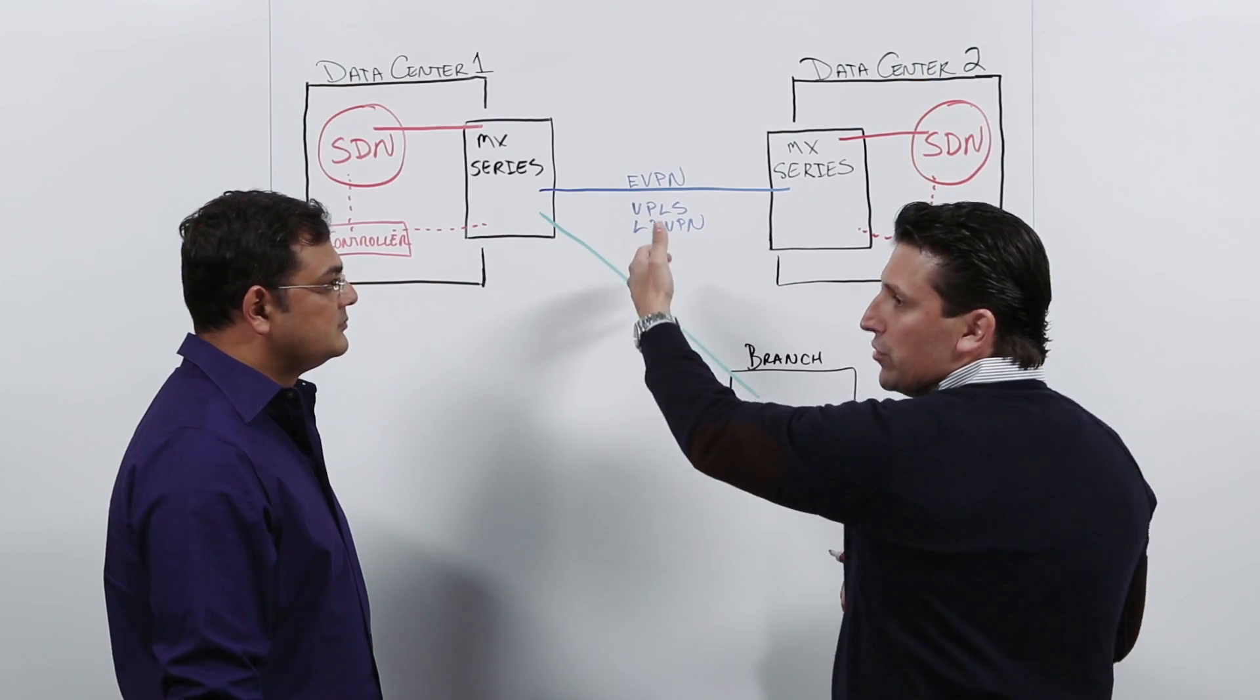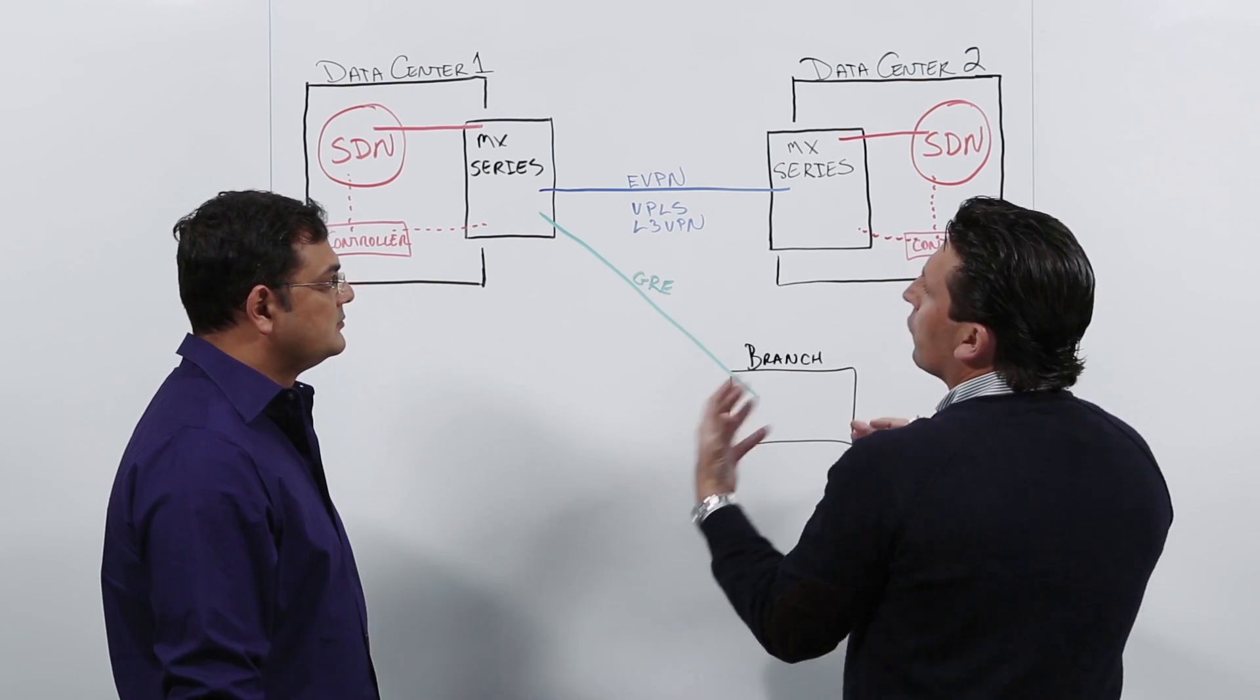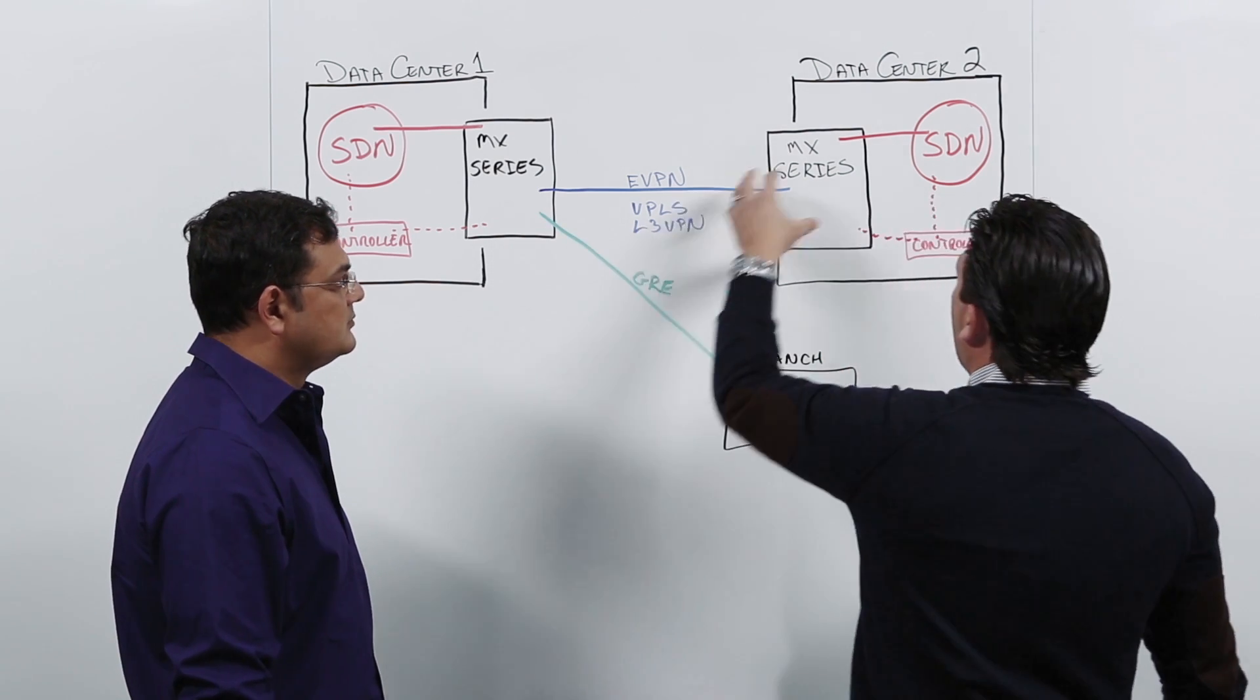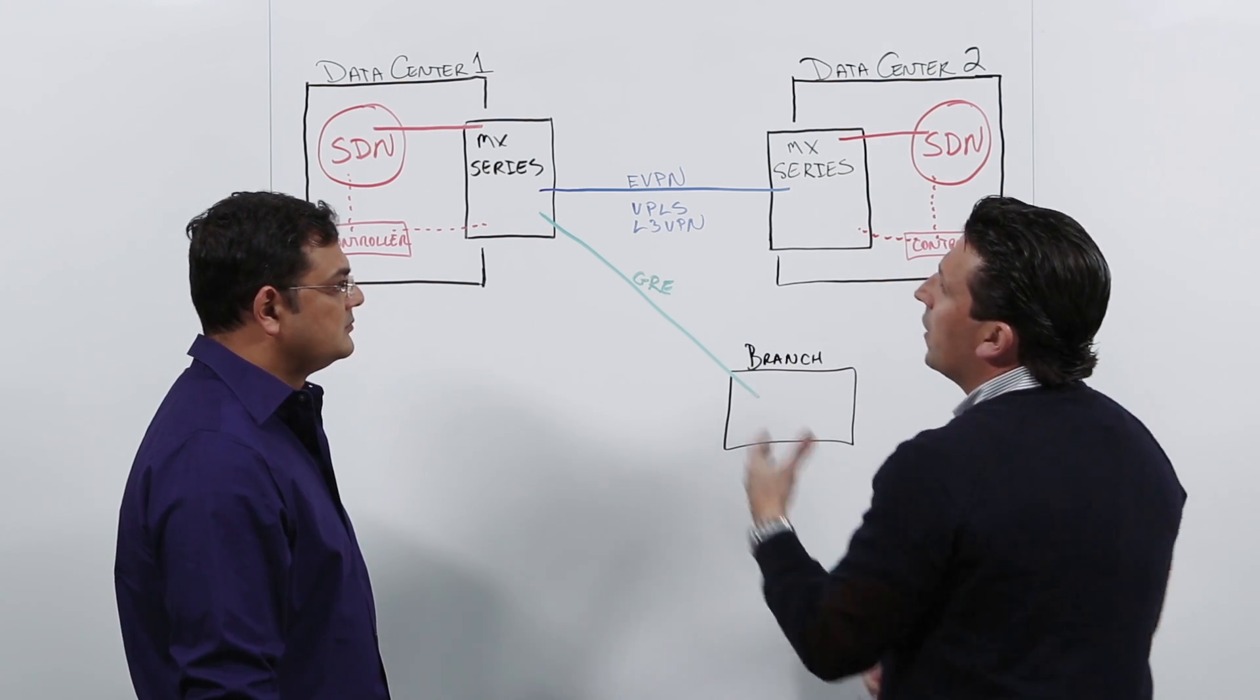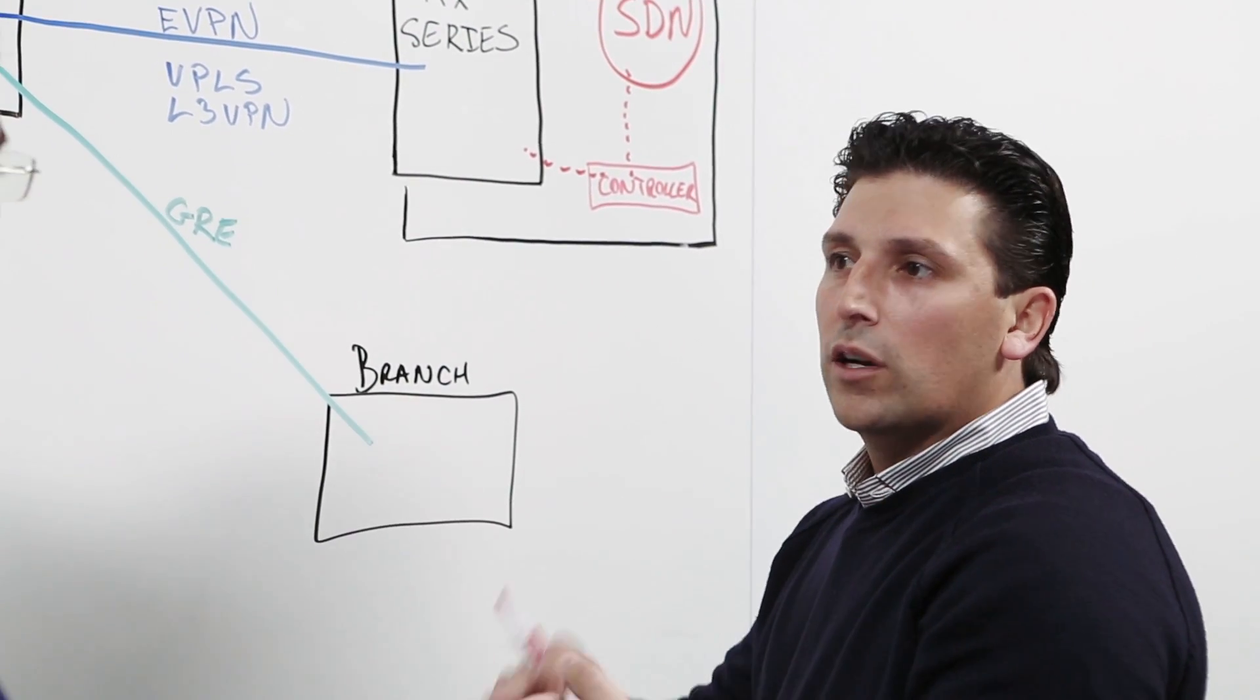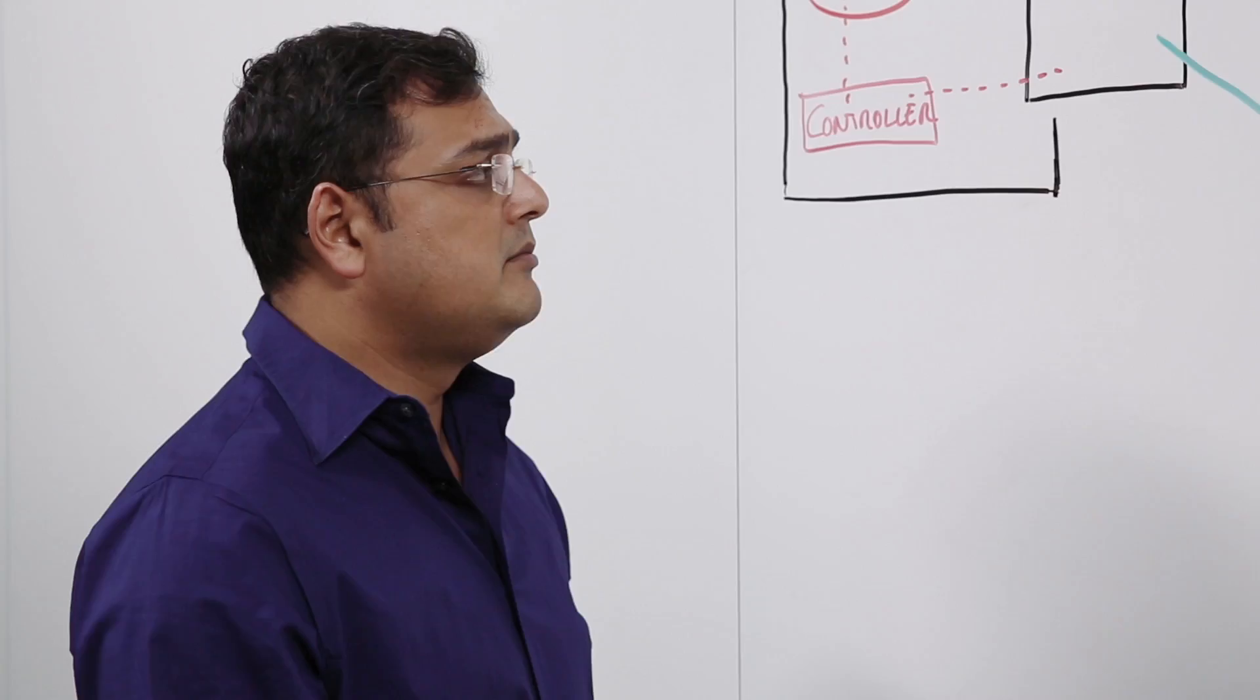Now if you look at connecting outside the data center, our customers previously would use things like VPLS or L3VPN, the open standards protocols, and that was really a best practice in the WAN. Now we've even introduced EVPN to do that connectivity and then GRE, let's say, to get to a branch office. But where the real magic happens is how do I go from my SDN environment into my WAN protocols and then come out on the other side and connect even to another SDN environment? The beauty of the MX is that I can do this all on the same platform. So come out of the SDN encapsulation, do the L2 lookup, do the L3 lookup, go directly into my WAN encapsulation all in the same platform.